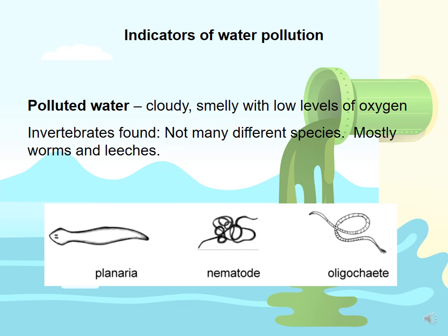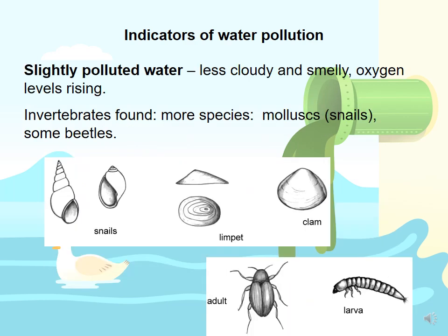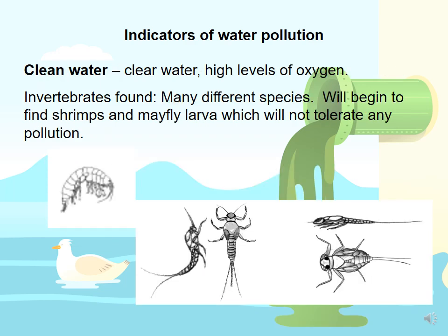There are mostly worms and leeches. In slightly polluted water, which is less cloudy and smelly, there is slightly more oxygen. The invertebrates will be more diverse and we will see more occurrences of mollusks such as snails and some beetles as well. In clean water, which is clear and has high levels of oxygen, there are many different species of invertebrates found. Here you will find many different species of shrimp and mayfly larvae, which will not tolerate any pollution.